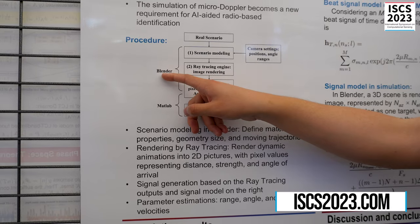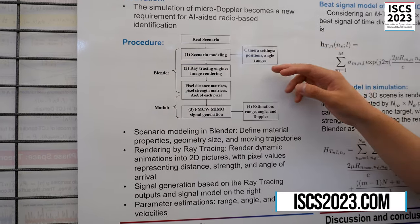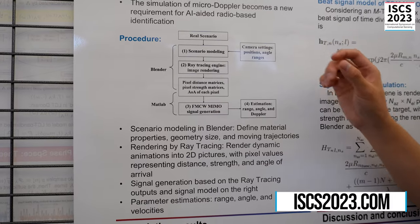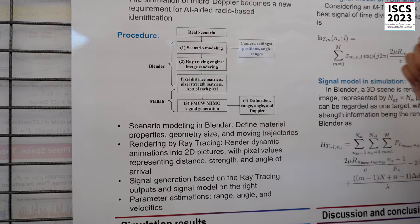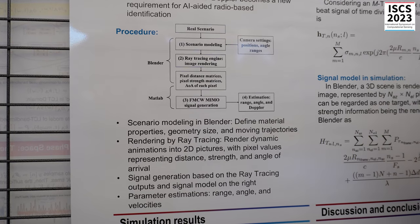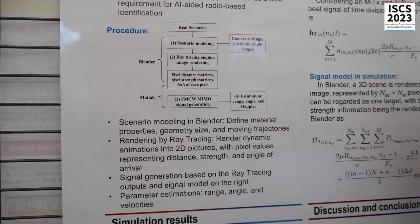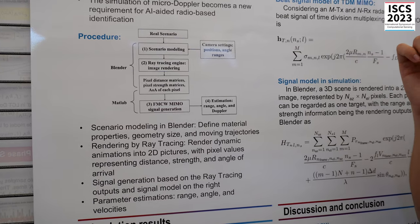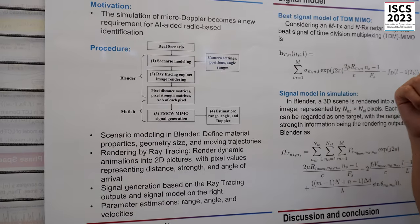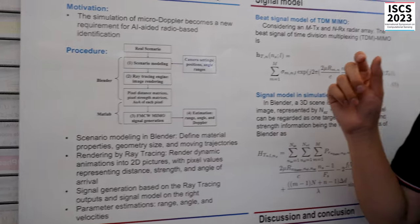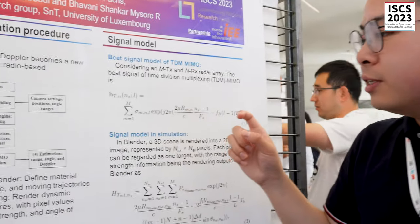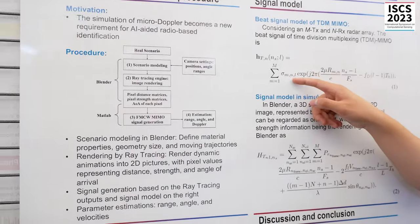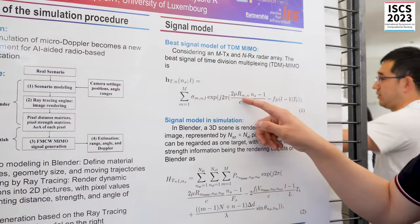In this, Blender is an animation software. We can define the motion of the target and also define the environment, so that we can use ray tracing to capture the propagation path between the radio path of the target and also the interaction between the target and the environment.